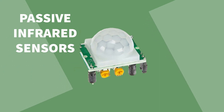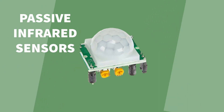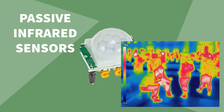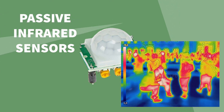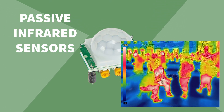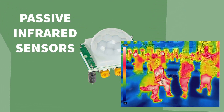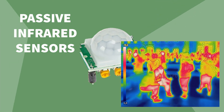Passive infrared sensors measure heat radiation given off by an object. These can be used to identify body heat to spot an intruder, as well as monitor temperature in an industrial freezer.